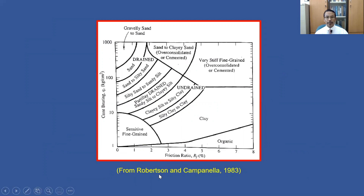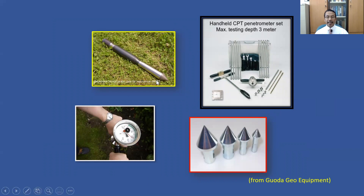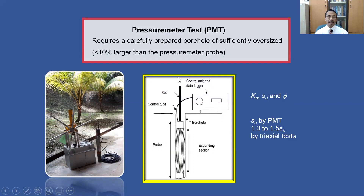Another chart from Robertson and Campanella (1983) can also be used to estimate soil type in more detail, with friction ratio on the x-axis and cone bearing (Q sub c) on the y-axis. Additionally, this slide shows a picture of a mechanical hand-held cone, which can be pushed into the ground by hand and may reach a depth of up to 3 meters.